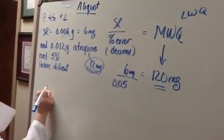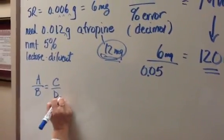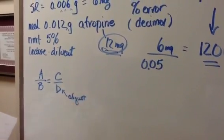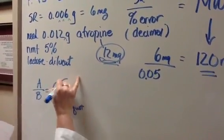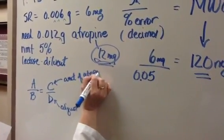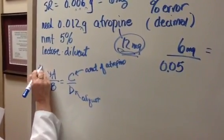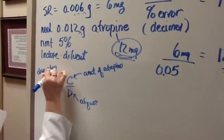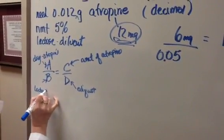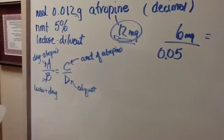So the way I like to figure out how I'm going to do this is I figure out my proportions, where D is my aliquot, which is that small portion of your larger mixture, which is going to contain C, which is the amount of atropine that you need. A is a larger amount of your drug, your atropine. And B is your lactose diluent plus A.